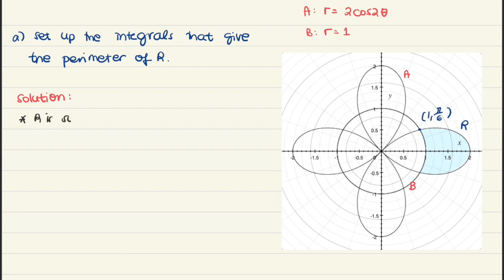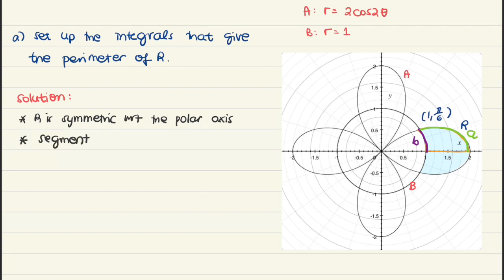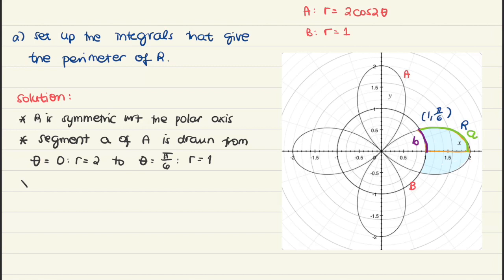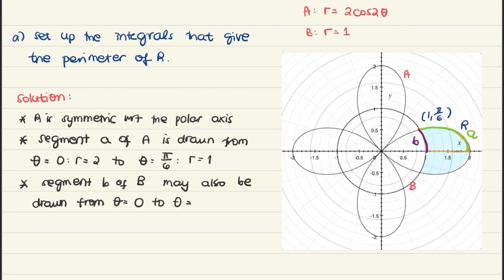We notice that region R is symmetric with respect to the polar axis — splitting it horizontally gives identical top and bottom halves. So we only need to consider half the region. We call the segment along the rose segment A, and the segment along the circle segment B. Segment A is drawn from theta equals 0 to theta equals pi over 6. Similarly, segment B of the circle can also be drawn from theta equals 0 to theta equals pi over 6. The perimeter of half the region is the sum of the lengths of segment A and segment B.